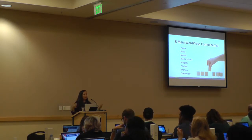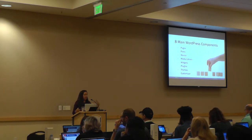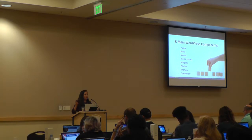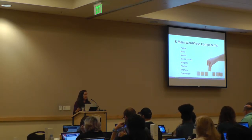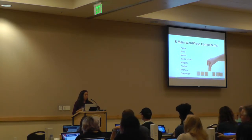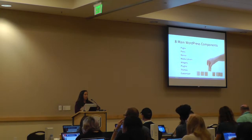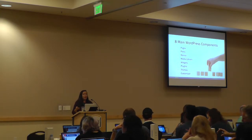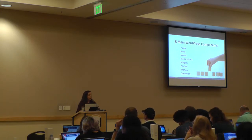Once you have that, you can create menus — menus are top navigation. The media library stores your images and any PDFs or audios you might have. Widgets, plugins and themes — I'll get to those later. And then the customizer. So these are the eight main WordPress components that you need to work with.